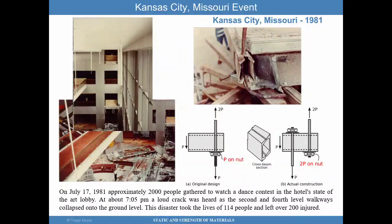We also have the Kansas City, Missouri event of 1981, where 2,000 people were gathered watching a dance contest. The second and fourth level walkways collapsed. The investigation revealed there were issues between the original design and the actual construction. A lot of times, errors are caused not during the design phase but during the implementation of these designs.